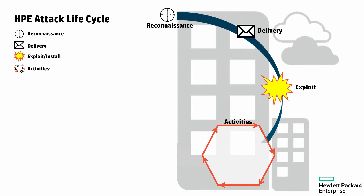The next stage involves an iterative process around a number of activities within the organization. First and above everything else at this point, we need to establish control. We've delivered something internally to the organization, but that malware needs to connect back out to the original attacker — back to its command and control — so they can start steering and guiding it around what they want to achieve. Typically, that means communicating back out to the outside world.